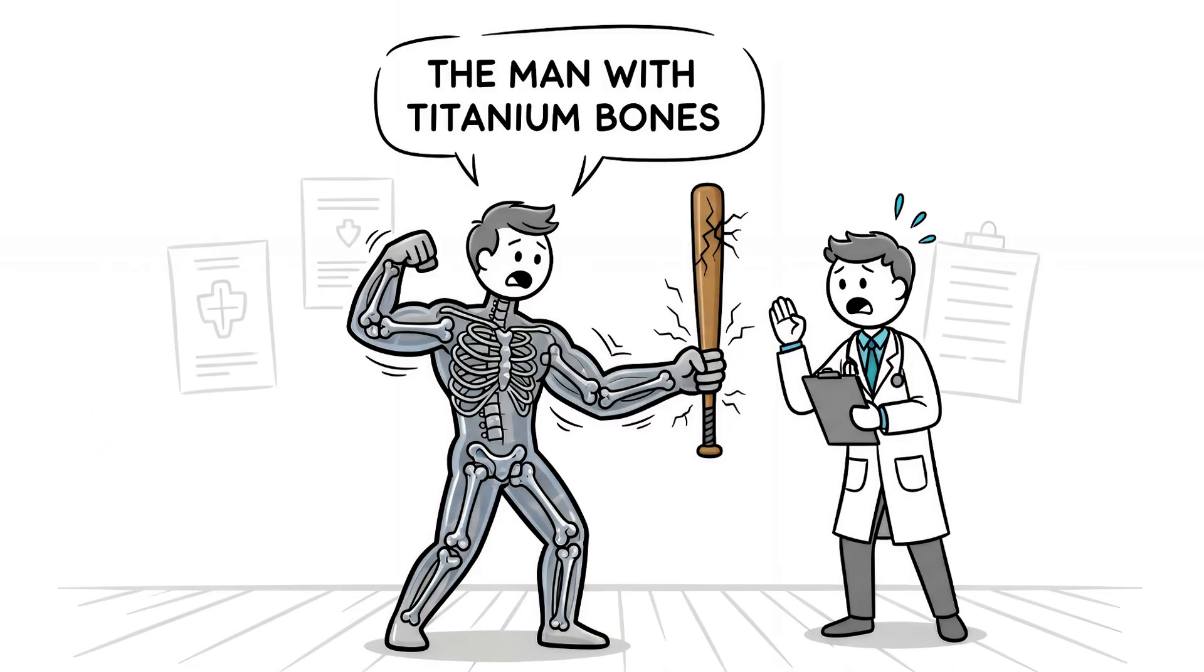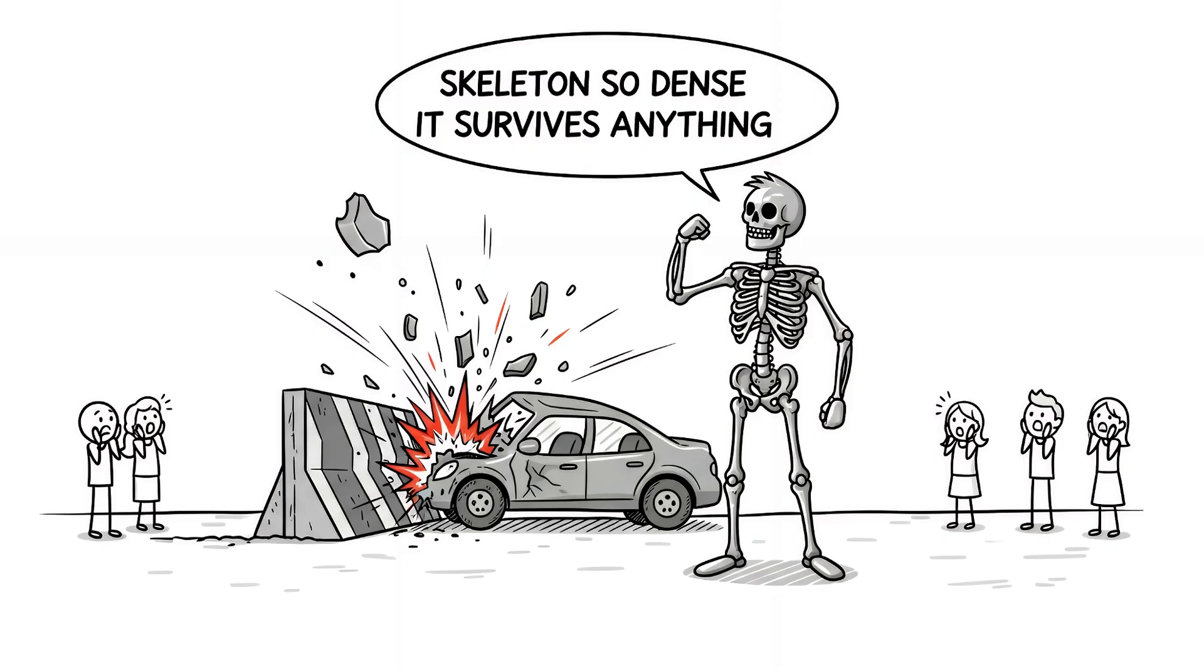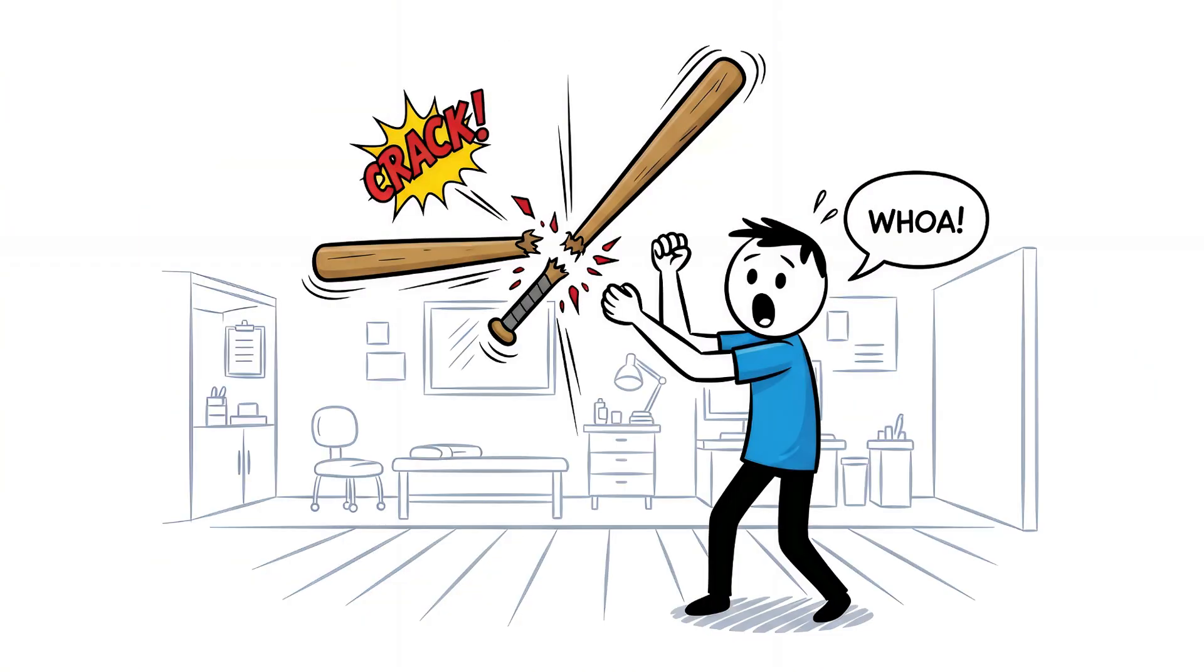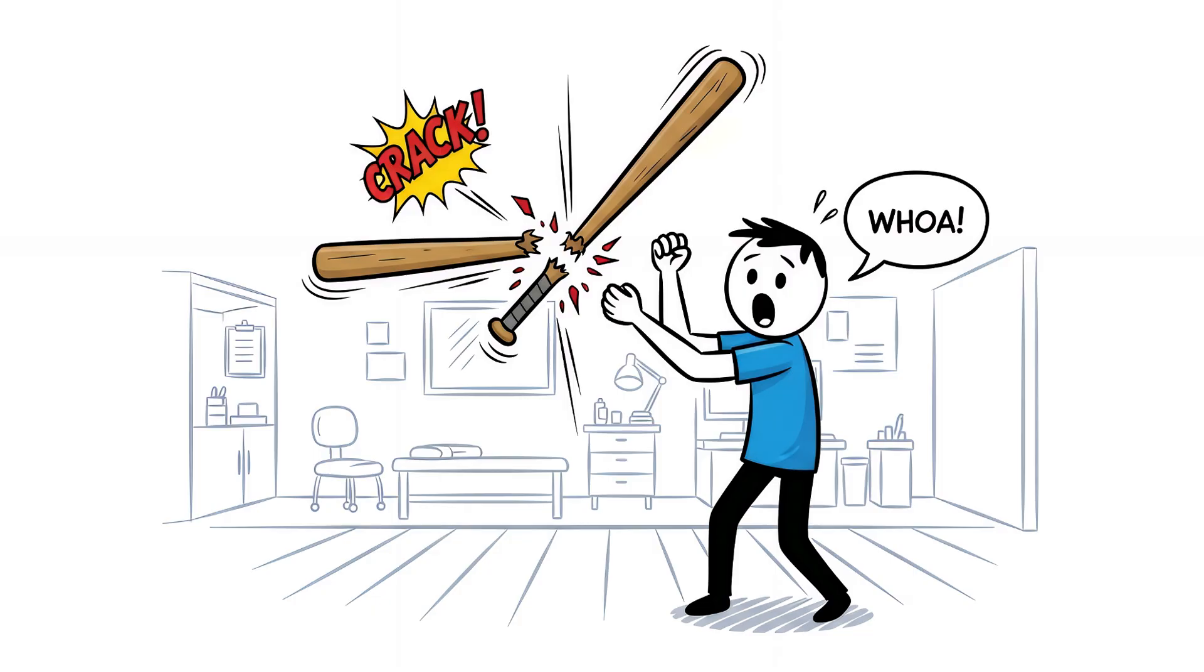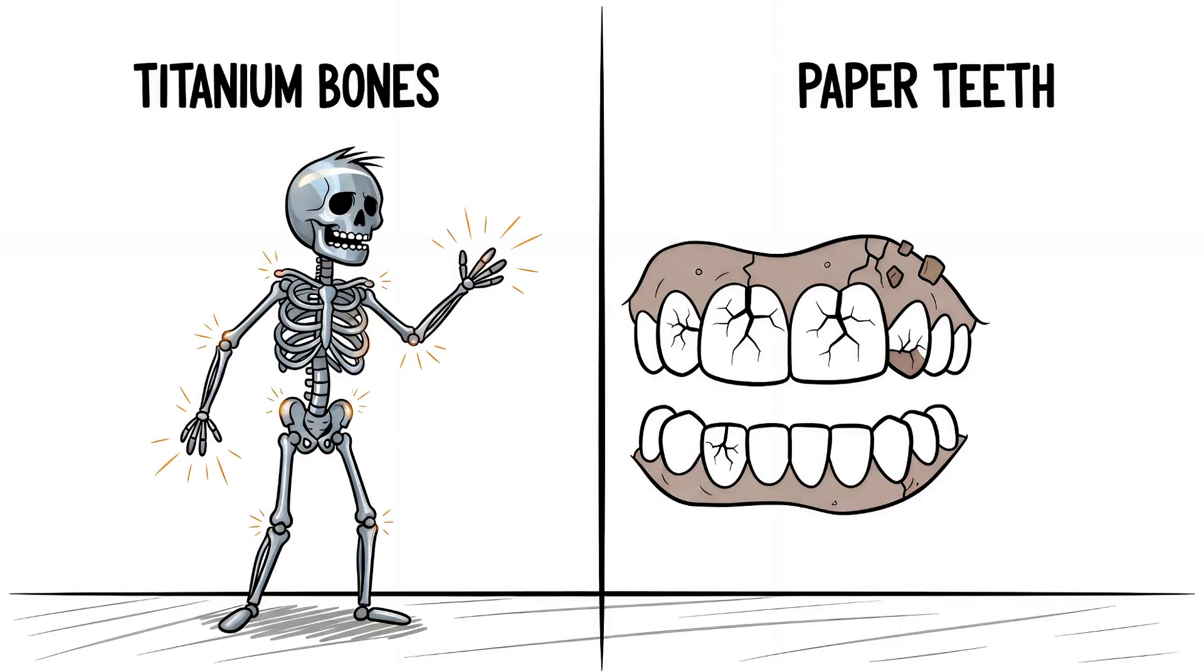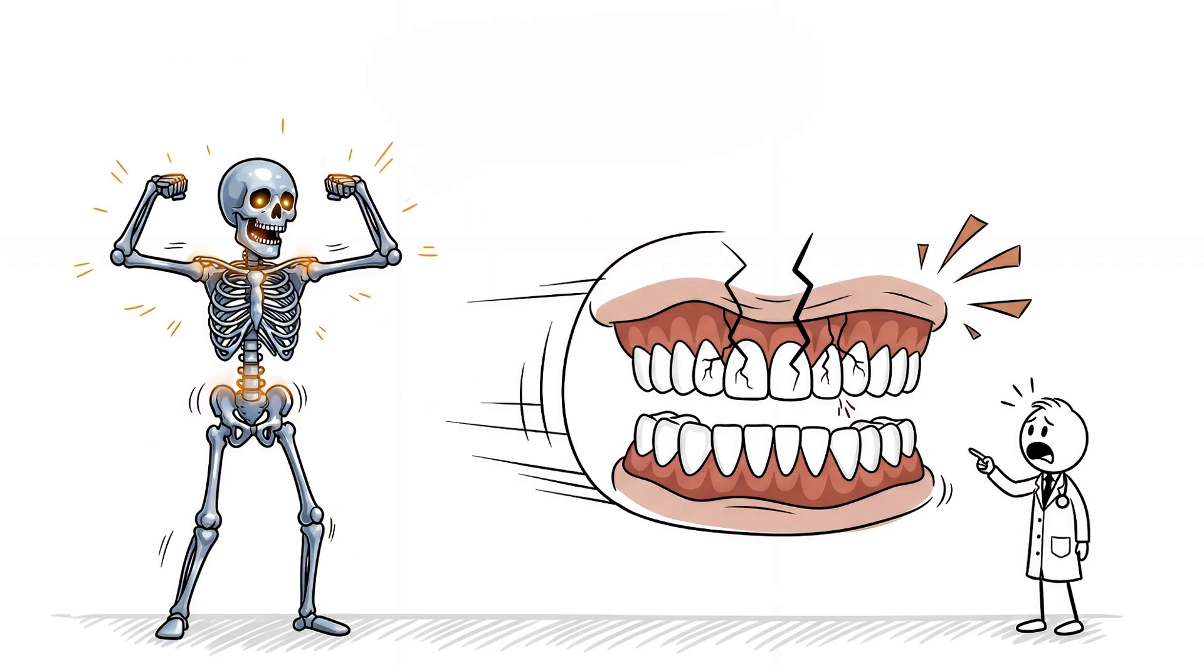Number 3. The man with titanium bones. Imagine a skeleton so dense you can survive a car crash that would turn a normal person's bones to dust. That's trichodento-osseous syndrome. One patient reportedly broke a baseball bat with a single swing of his forearm. His bone mineral density is so high, doctors call it unbreakable. So where's the catch? His bones are titanium. His teeth are paper. The same mutation that makes his skeleton invincible destroys his enamel.